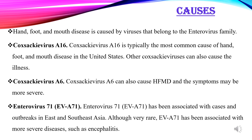The causes of hand, foot and mouth disease are mainly due to Coxsackie virus A16, which is typically the most common cause in the United States. Coxsackie virus A6 can also cause HFMD and the symptoms may be more severe. Enterovirus EVA71 has been associated with cases and outbreaks in East and Southeast Asia, and although very rare, EVA71 has been associated with more severe diseases such as encephalitis.